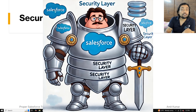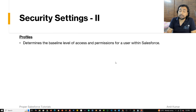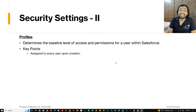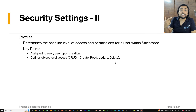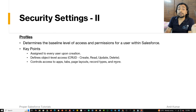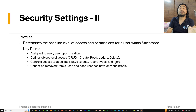This setting is another layer of armor in your Salesforce org. Profiles determine the base level of access and permission for any user, decided by the user license provided. It is assigned as soon as a user is created. It defines object level access — meaning CRUD access: Create, Read, Update, and Delete. It also controls access to apps, tabs, page layouts, record types, and more. Any profile assigned to a user cannot be removed — a user should always have one profile assigned.